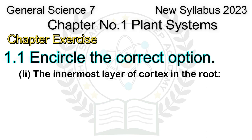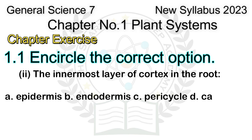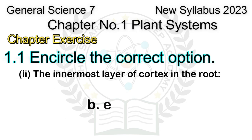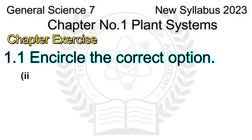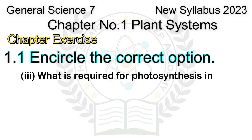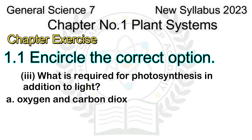Question 2: The innermost layer of cortex in the root is: A. Epidermis, B. Endodermis, C. Pericycle, D. Cambium. Answer: B. Endodermis.